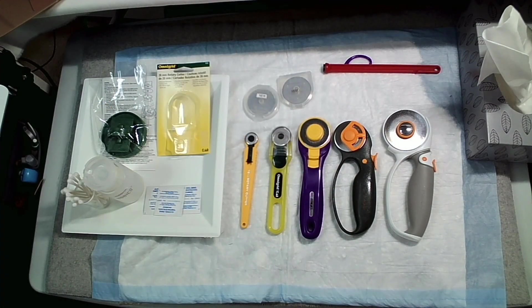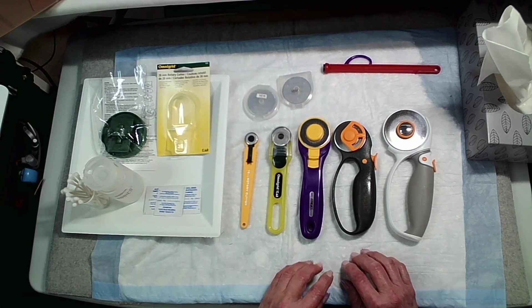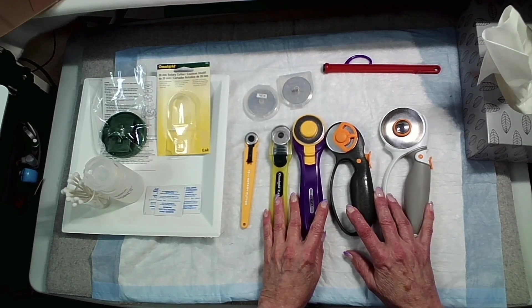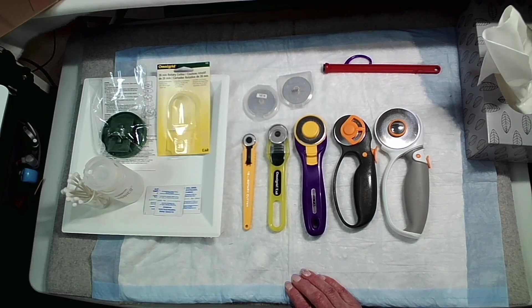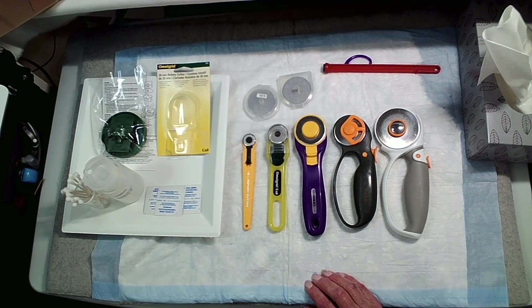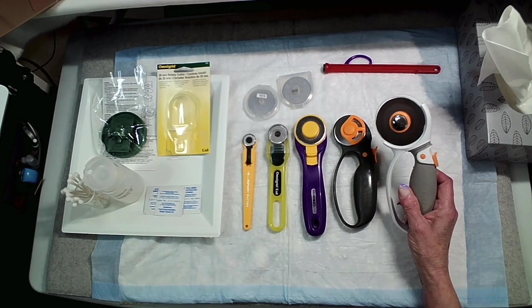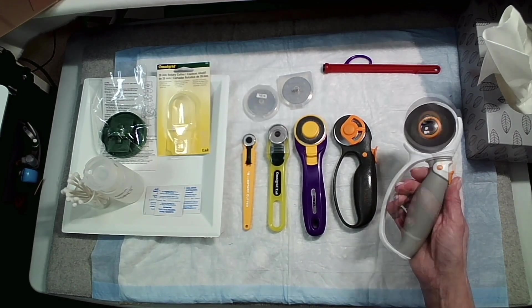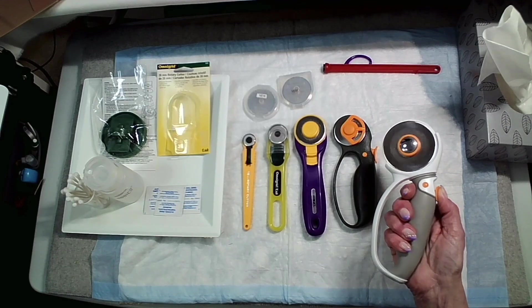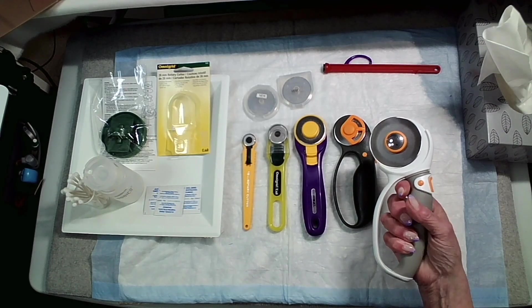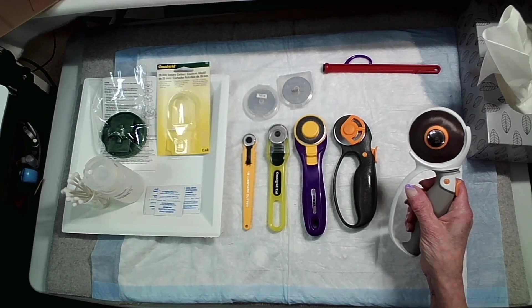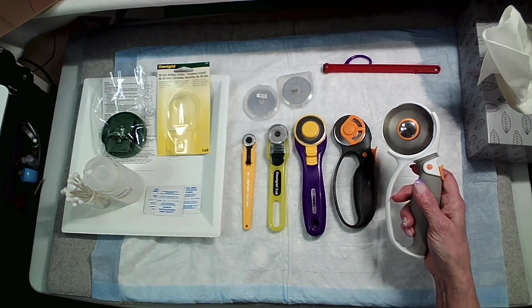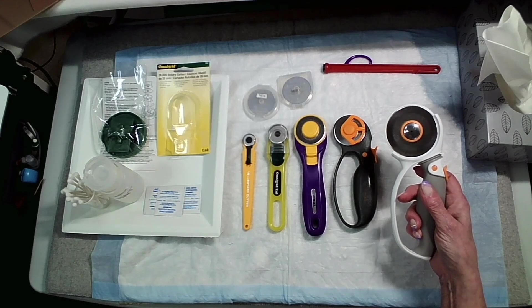In part two of the cutting tools I use, I'm going to be focusing on my rotary cutters. Each one of these has a different purpose. Which brand is personal preference. The 60 millimeter one I have is from Fiskars. The blade is retractable just by pressing the little button.